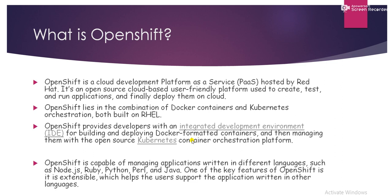OpenShift is an open source cloud-based platform hosted by Red Hat through which you can quickly build, deploy, and scale containerized applications. OpenShift is a combination of both Docker containers and Kubernetes orchestration, and both are built on RHEL.